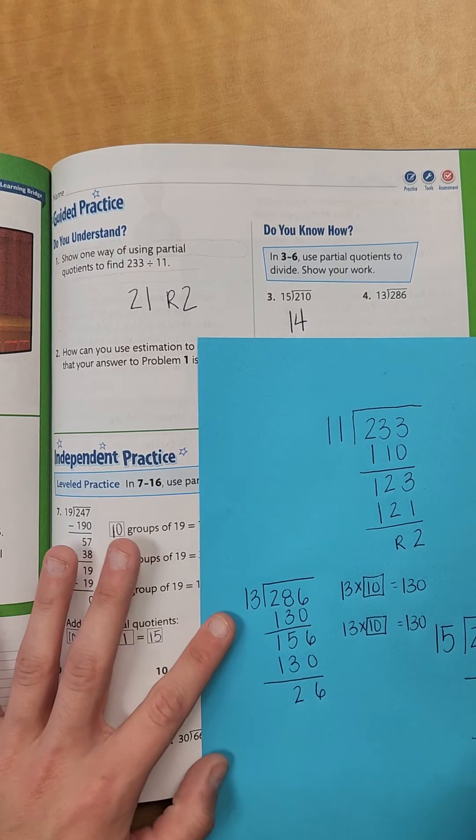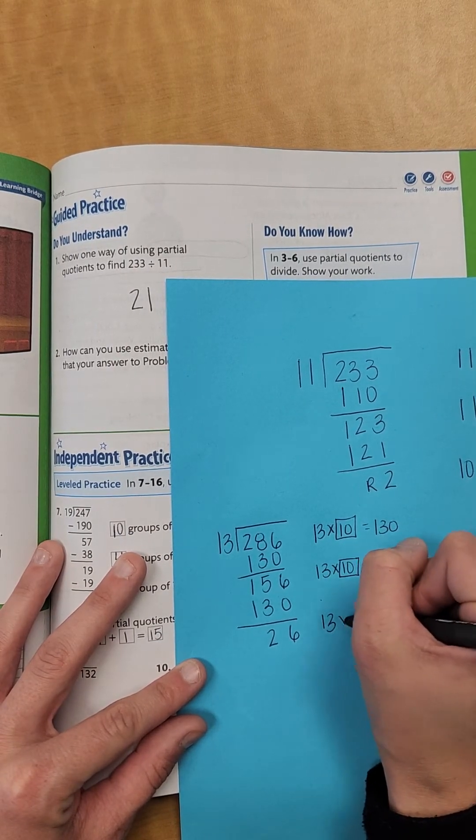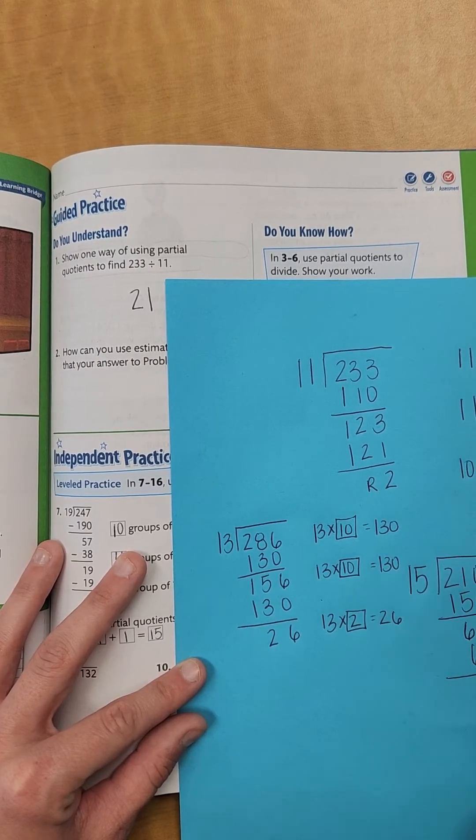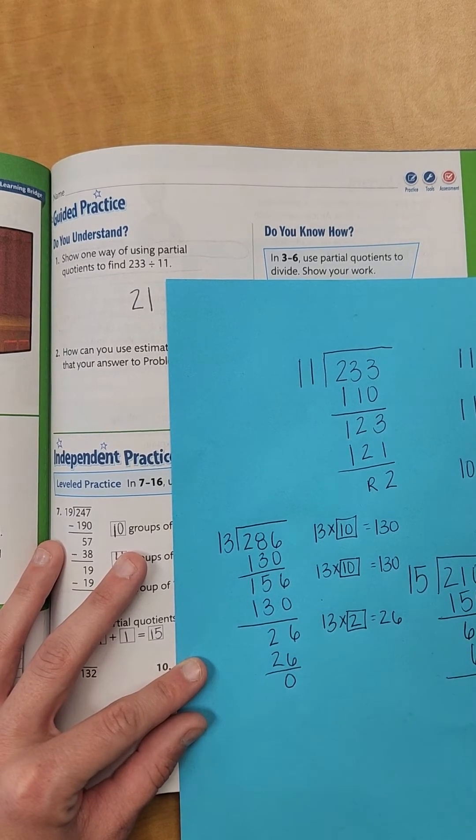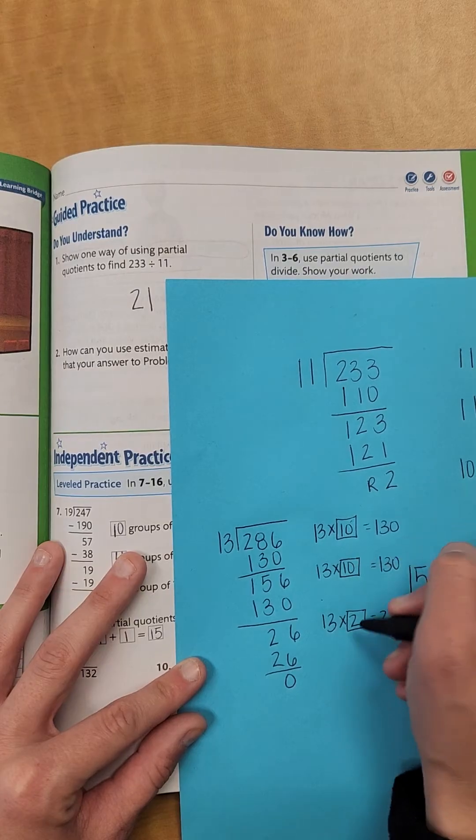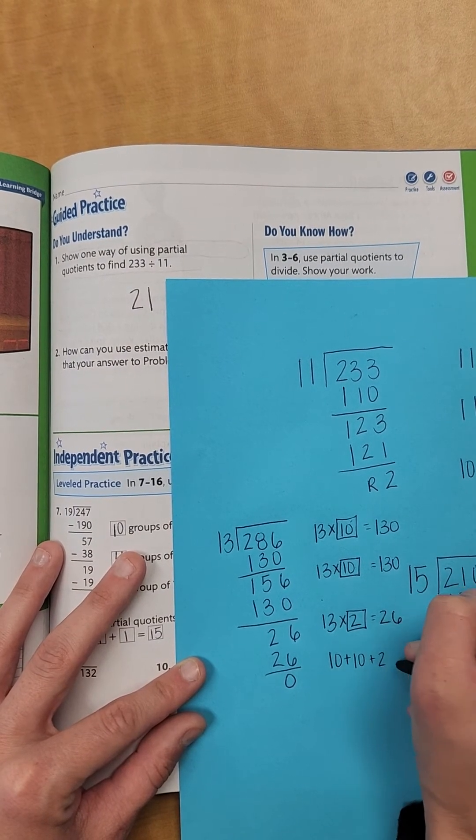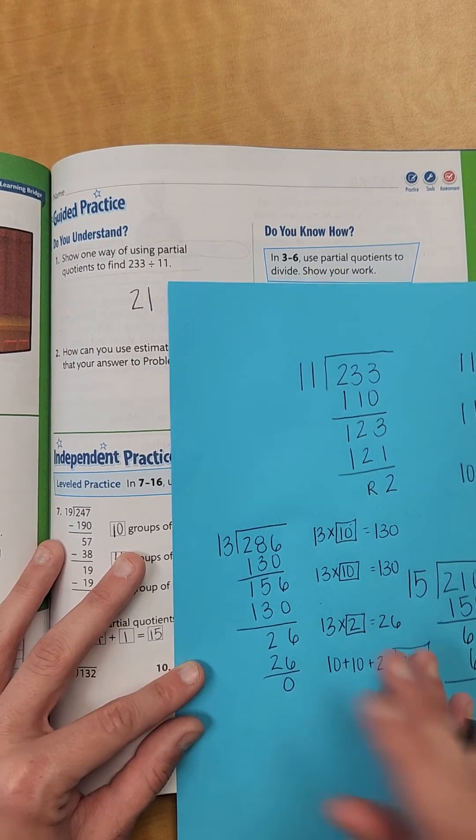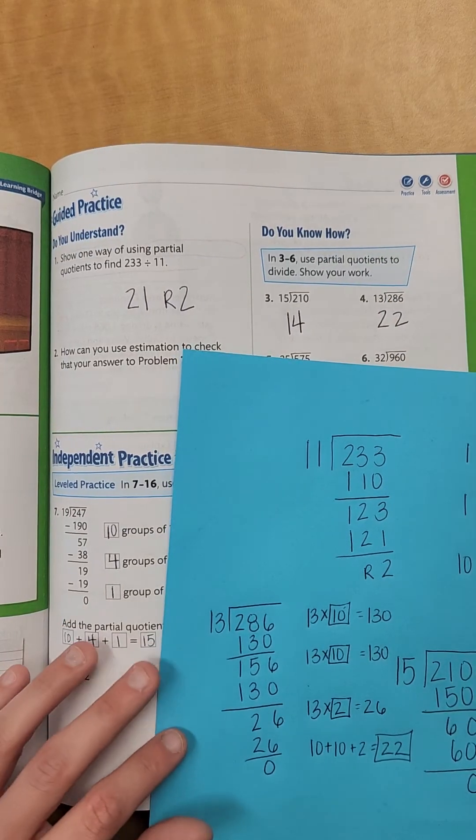And 13 will go into 26, I know that one, 2 times. If you didn't, you could just multiply it to check yourself. 13 times 2 equals 26. It'll go into it evenly. So I've subtracted, I'm left with 0. Now I add up all my boxes, 10 plus 10 plus 2 equals 22. So that would be our final answer is 22.